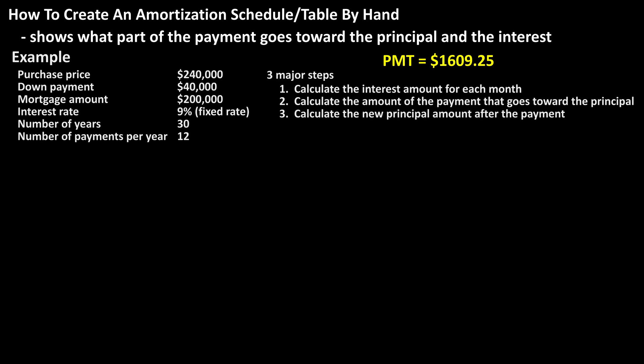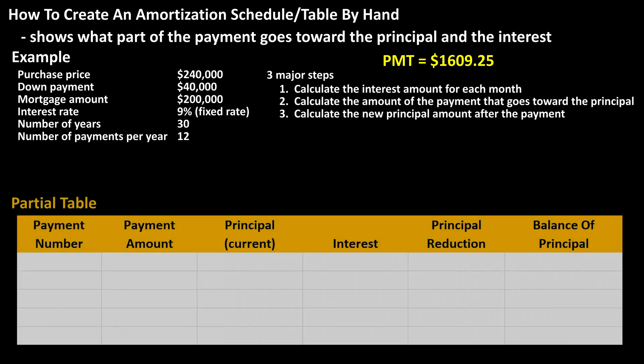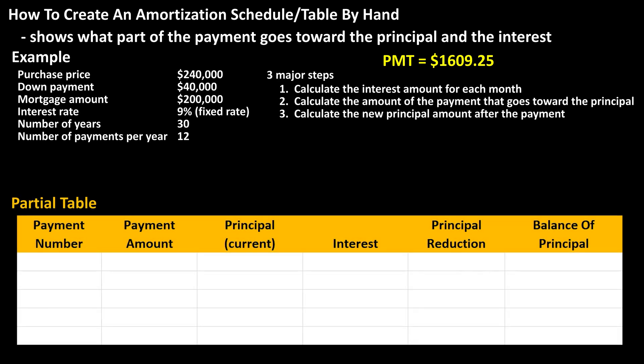In our table, there are going to be six columns: the payment number, payment amount, current principal, interest amount, principal reduction, and balance of principal.